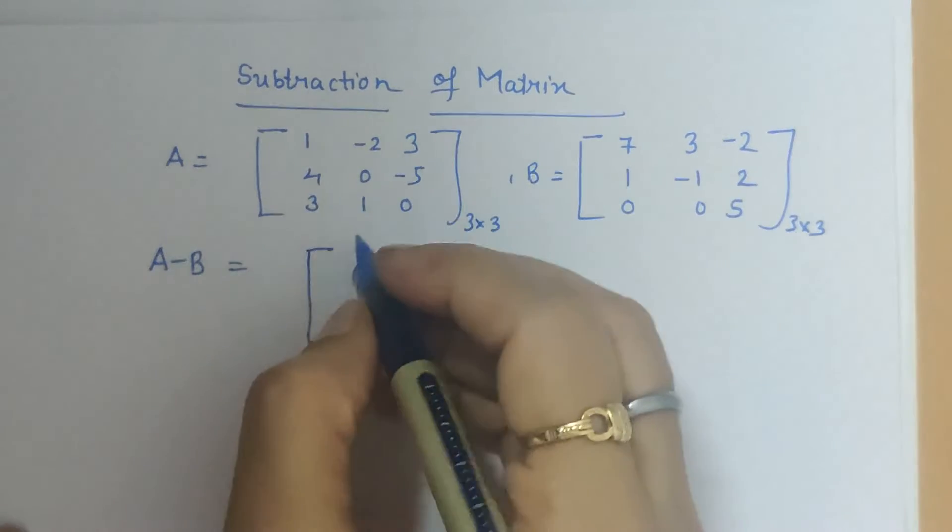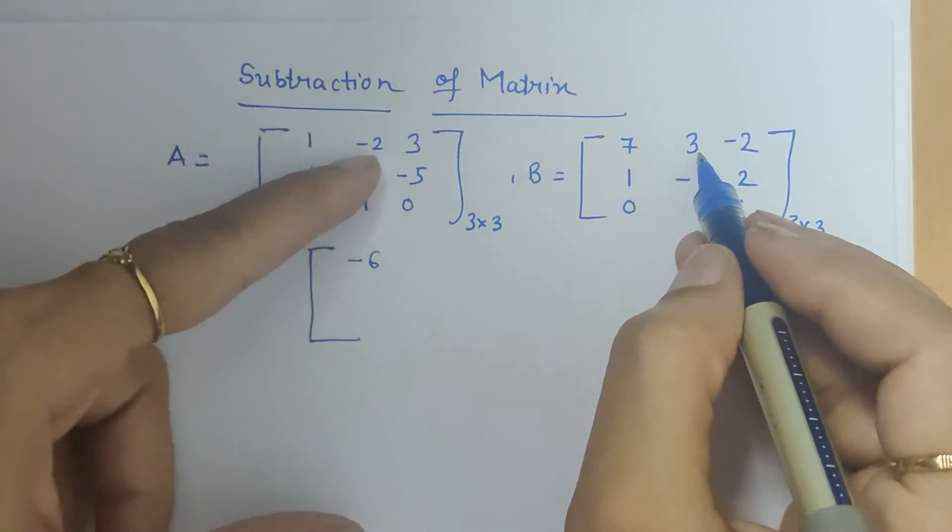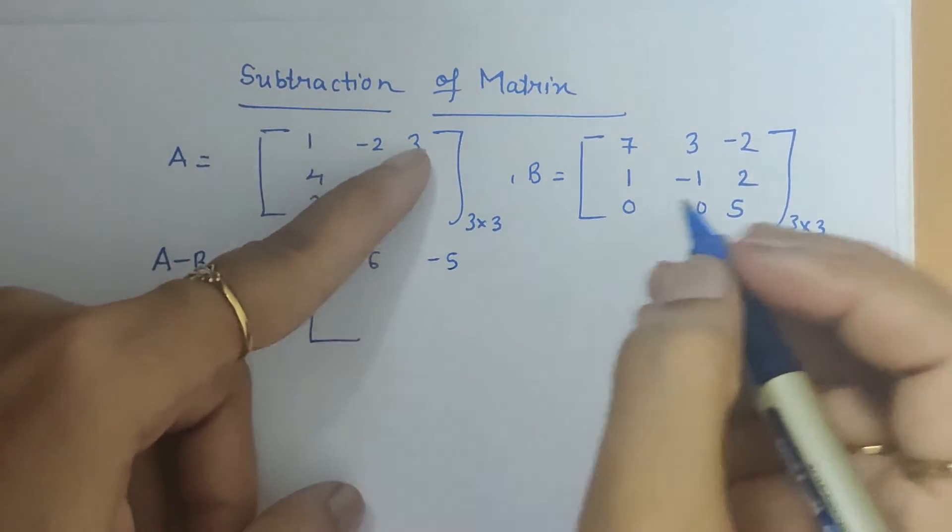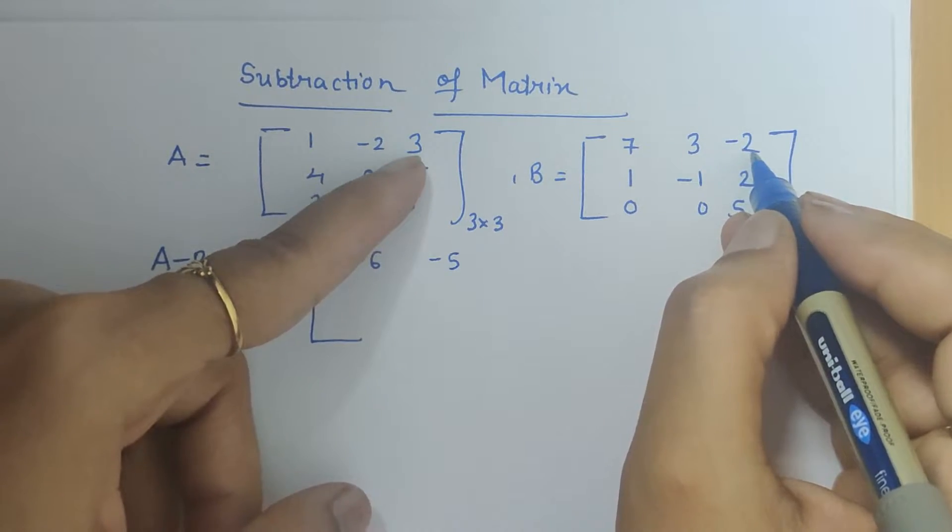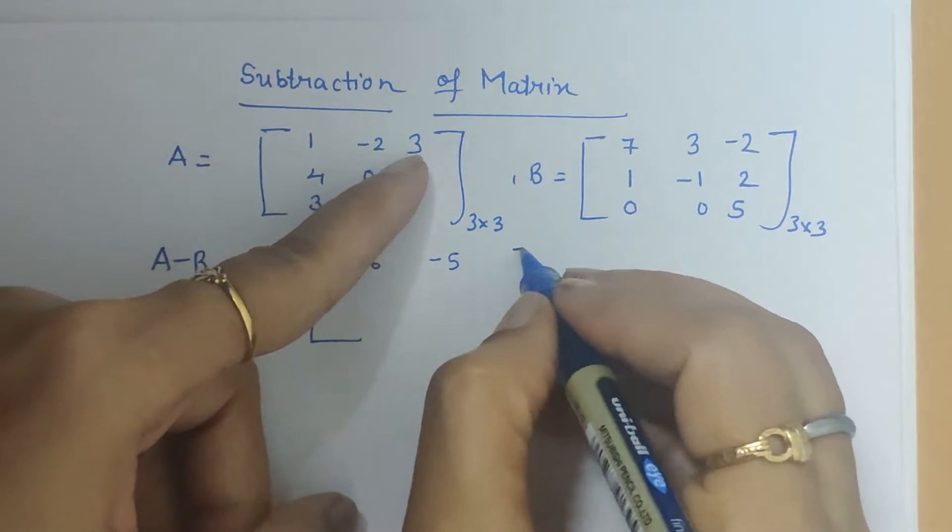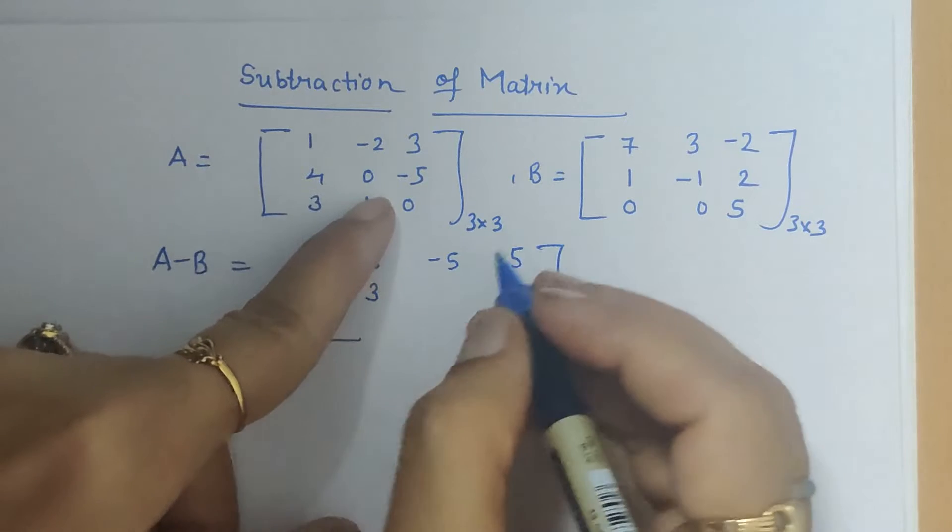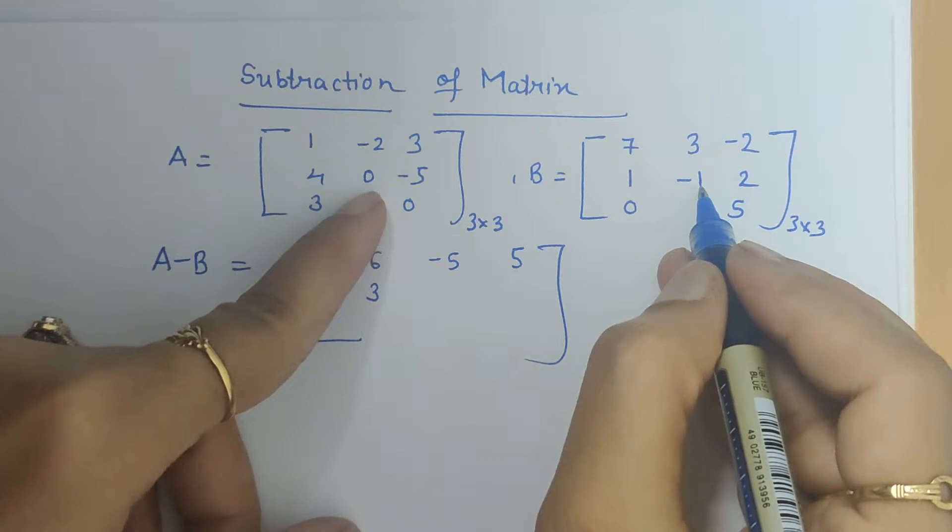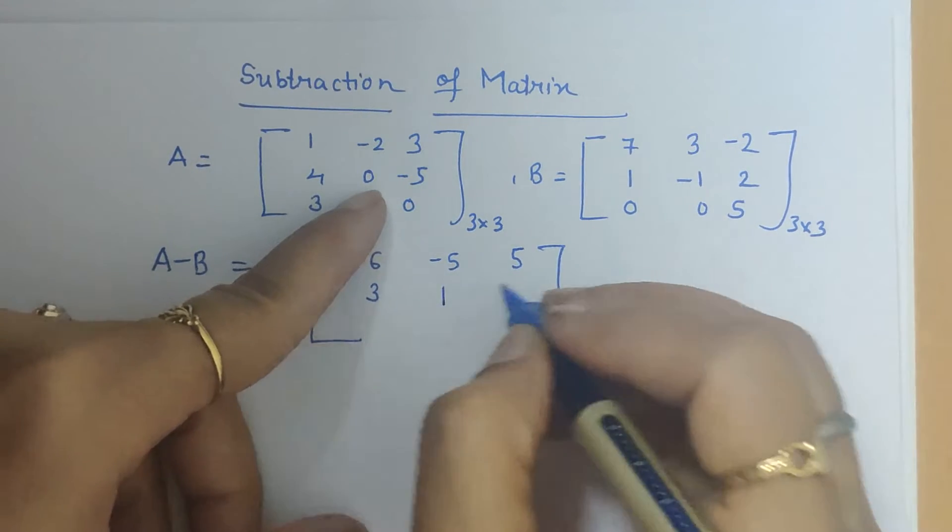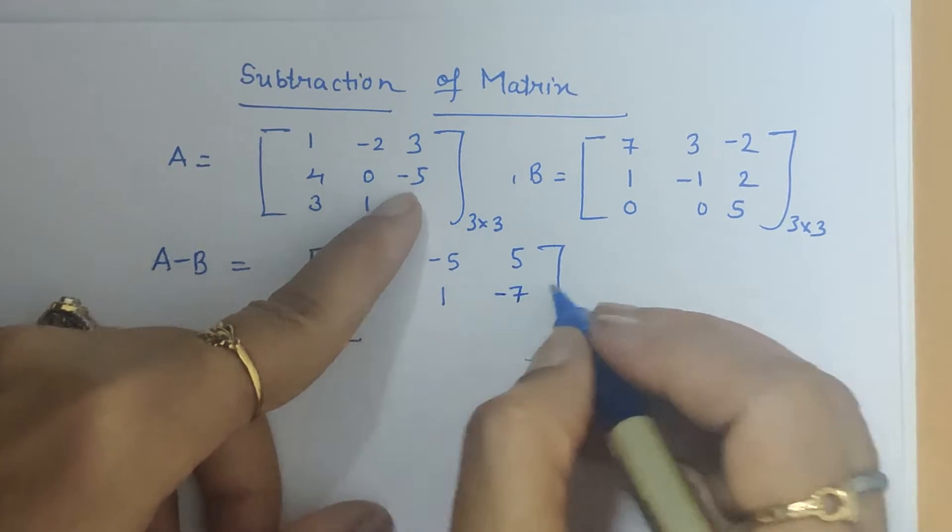1 minus 7 is minus 6, minus 2 minus 3 is minus 5, 3 minus of minus 2 that means 3 plus 2 is 5, then 4 minus 1 is 3, 0 minus of minus 1 that is 0 plus 1 is 1, minus 5 minus 2 is minus 7.